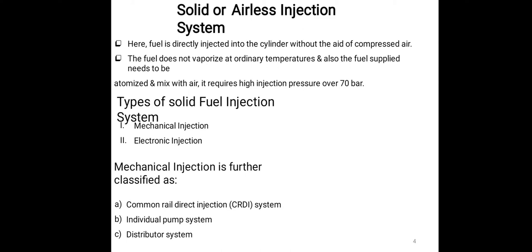Types of solid fuel injection system. Types kya kya hai. Mechanical injection or electronic injection. Mechanical injection is further classified as common rail direct injection system, jiska short form has CRDI, individual pump system, or distributor system.